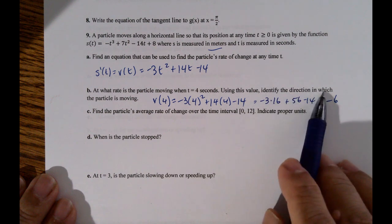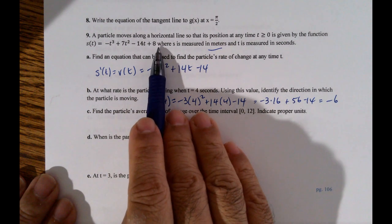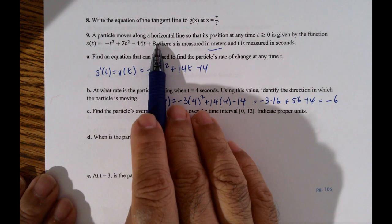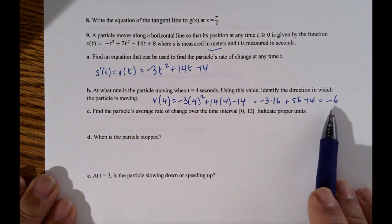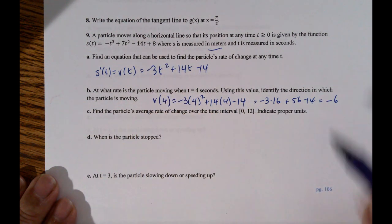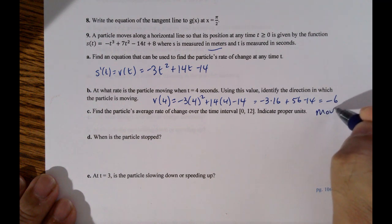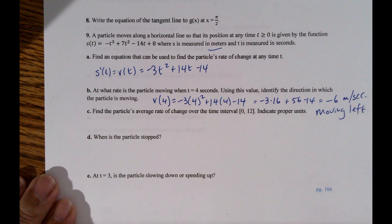Identify the direction in which the particle is moving. So back to this, this is moving at a horizontal line. And if it has a negative velocity, it is moving left. It is moving left. And this is at 6 meters per second.